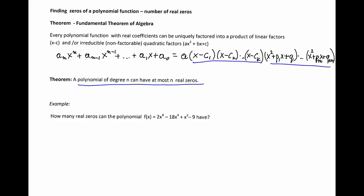So once we have a polynomial, we know how many zeros we can expect. Let's look at the example. How many real zeros can the polynomial F of X equals 2X to the 6 minus 18X to the 4 plus X squared minus 9 have? And if you look at this polynomial, the degree of that polynomial is 6, and therefore there are at most six zeros for this polynomial.